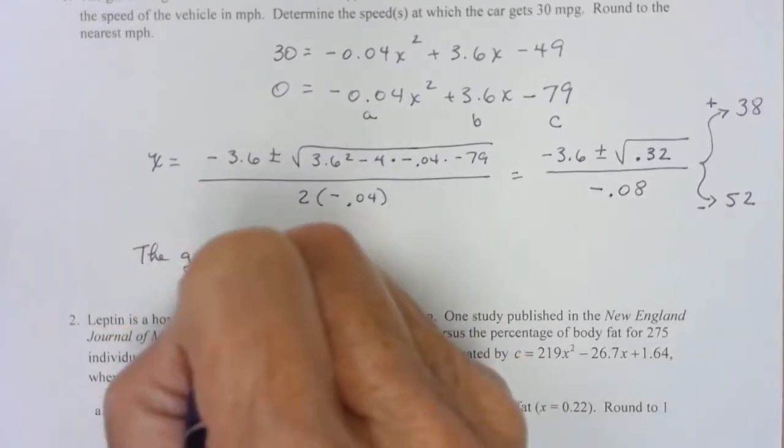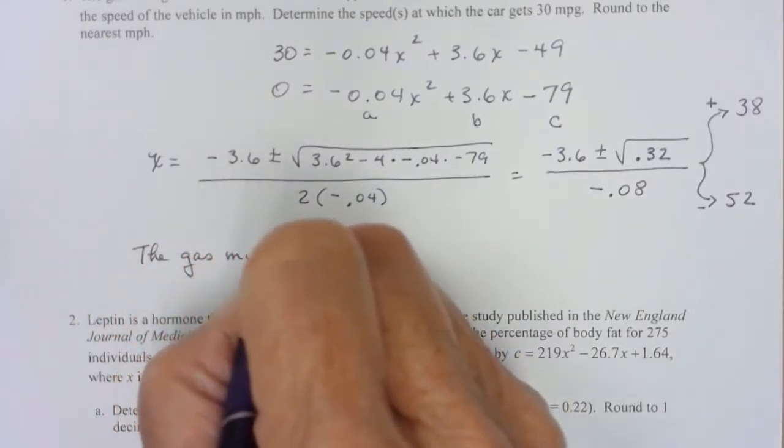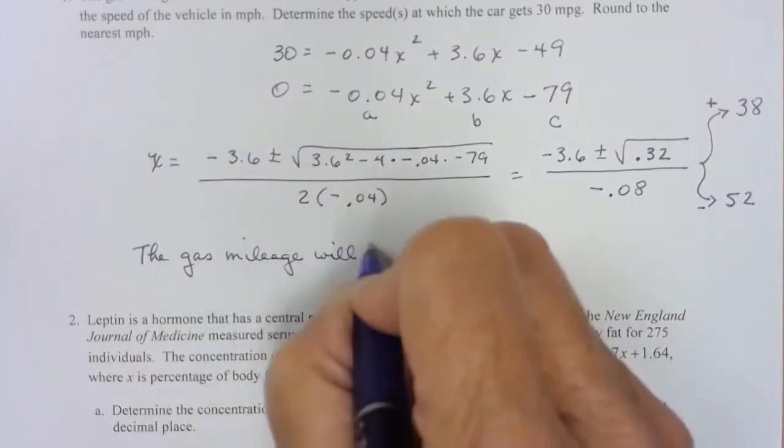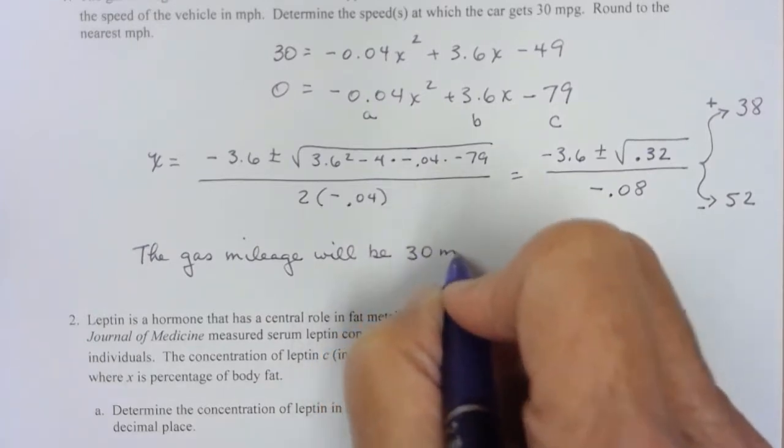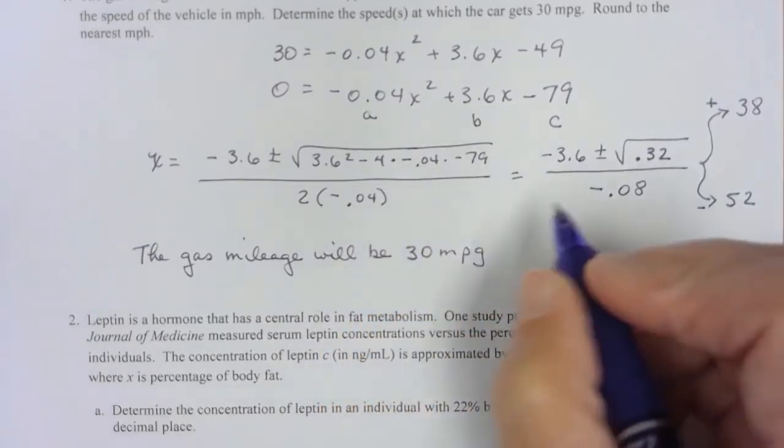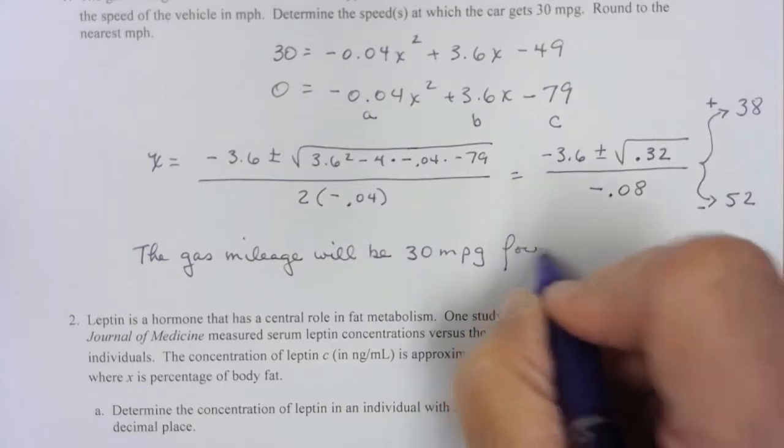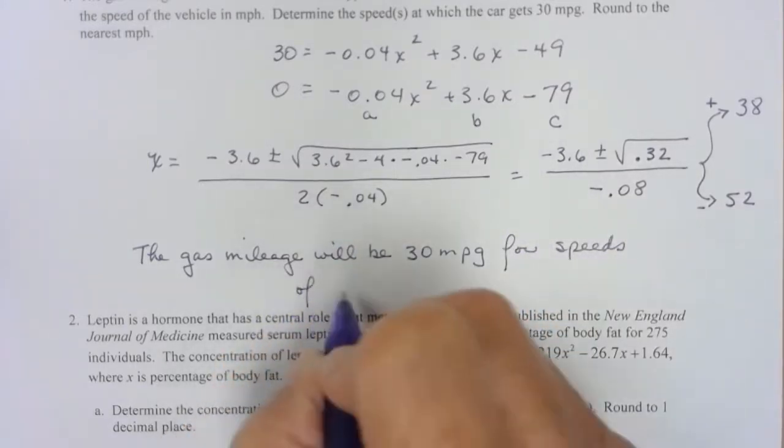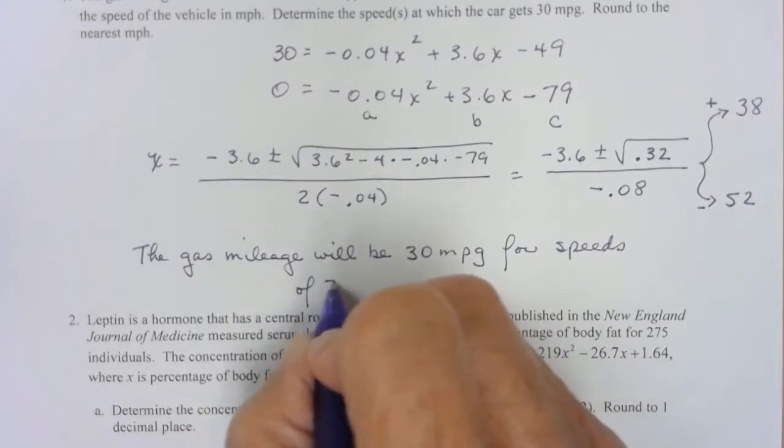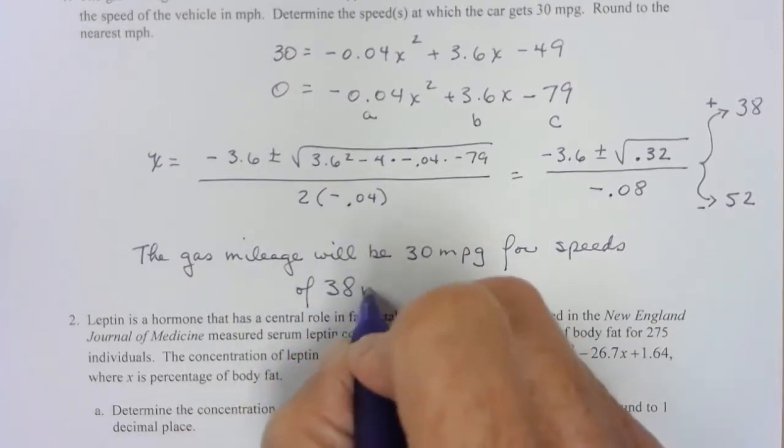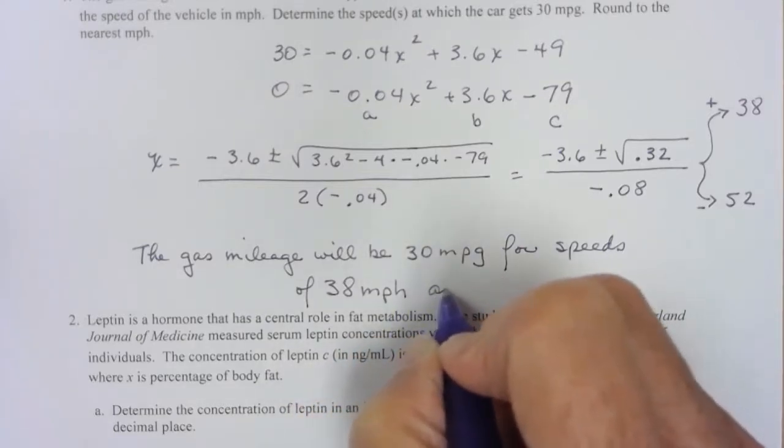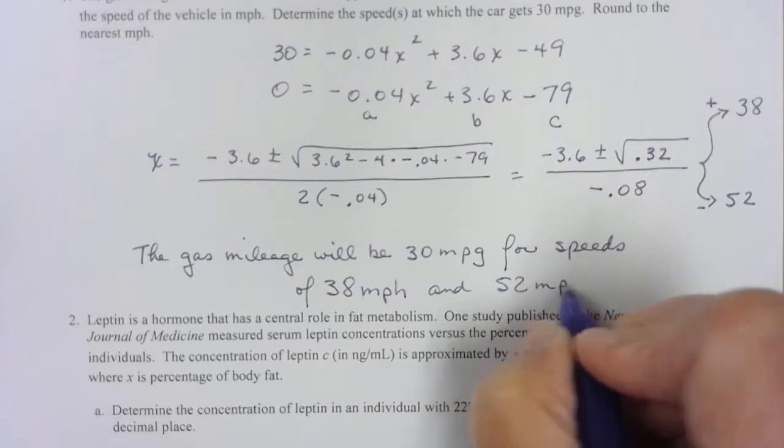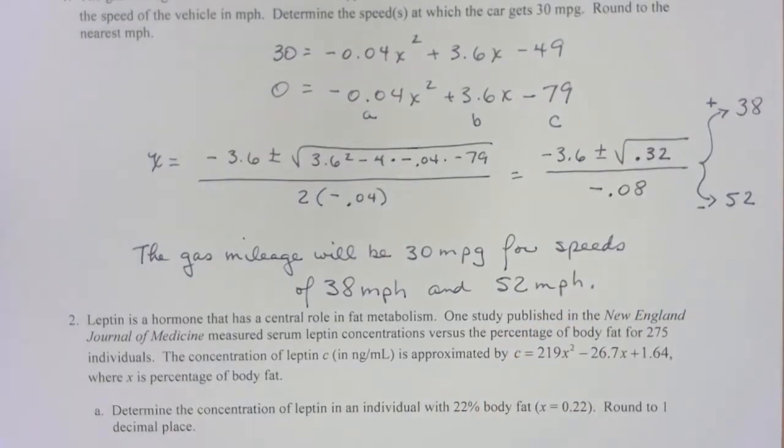The gas mileage will be 30 miles per gallon for speeds of 38 miles per hour and 52 miles per hour. So that finishes that question.